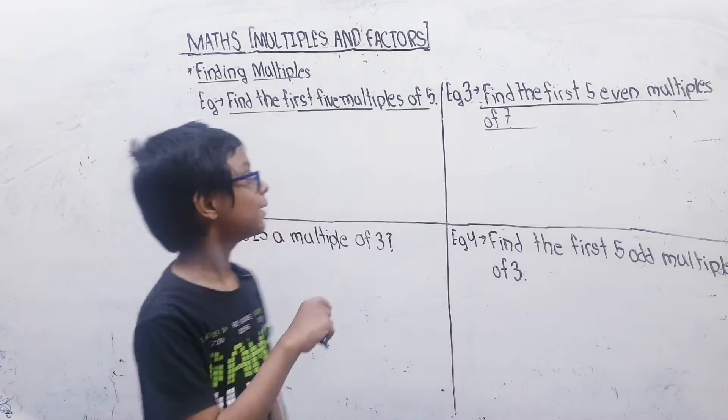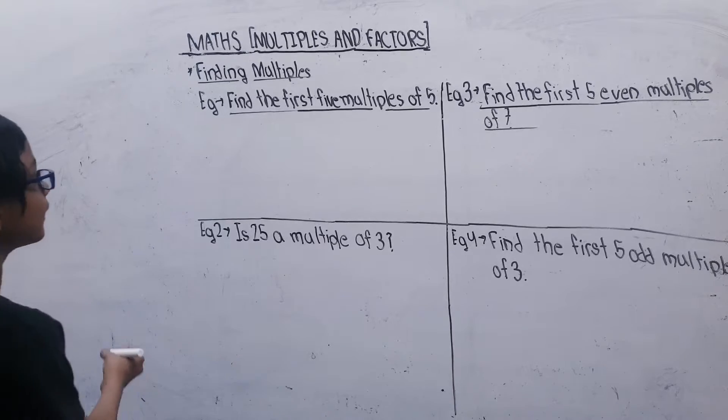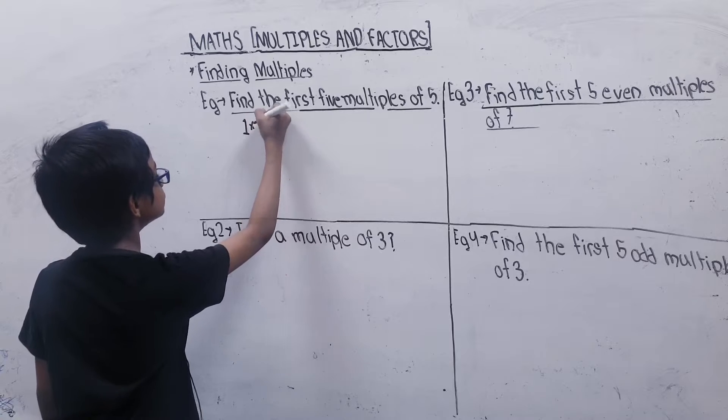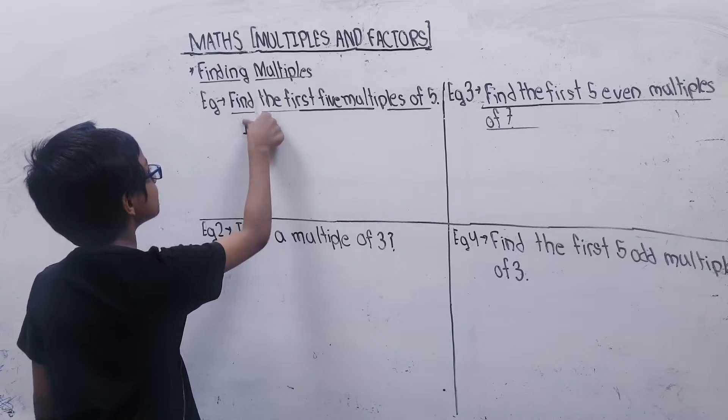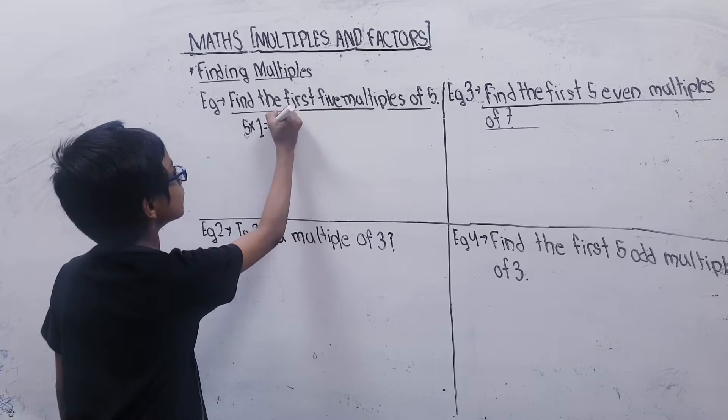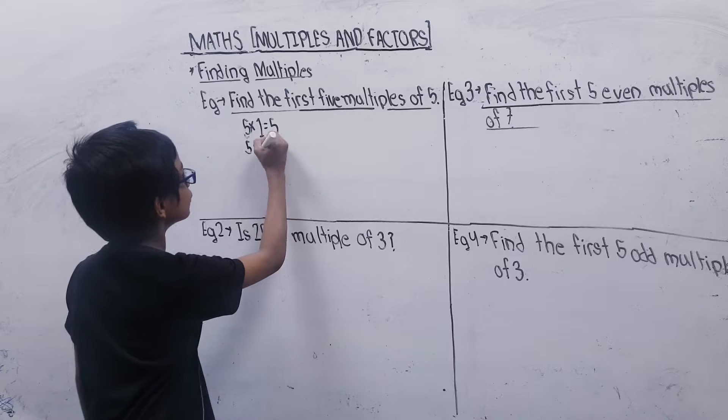We want to multiply the multiples of 5. Just keep 5 multiplied by 1 equal to 5, 5 multiplied by 2 equal to 10, 5 multiplied by 3 equal to 15.